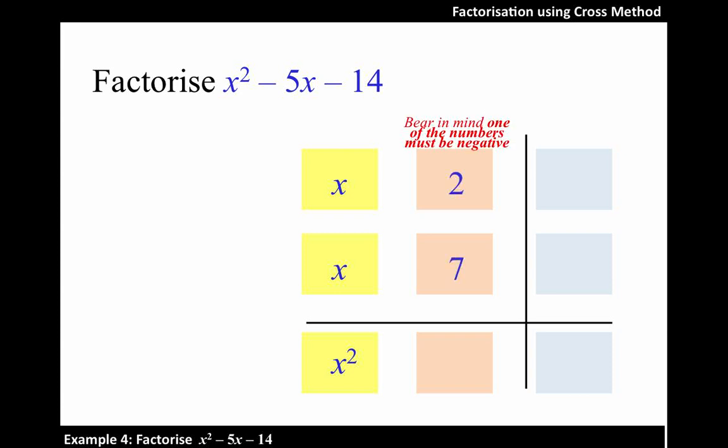However, we must bear in mind that 2 and 7, one of them must be negative, so that when multiplied together, we get back negative 14.